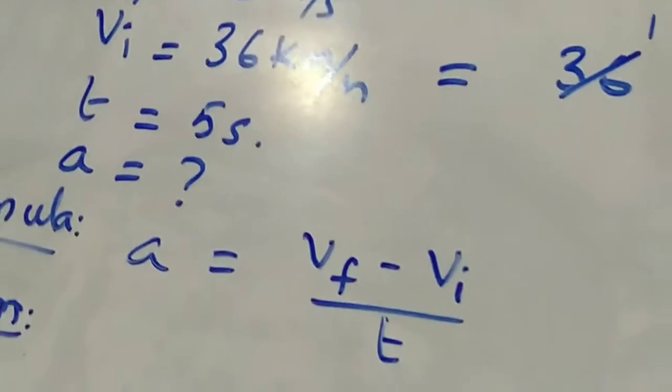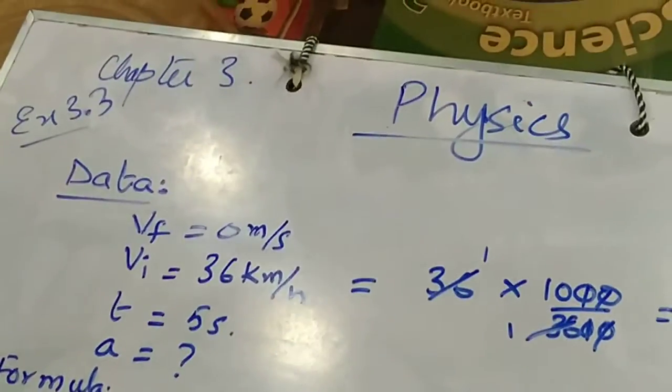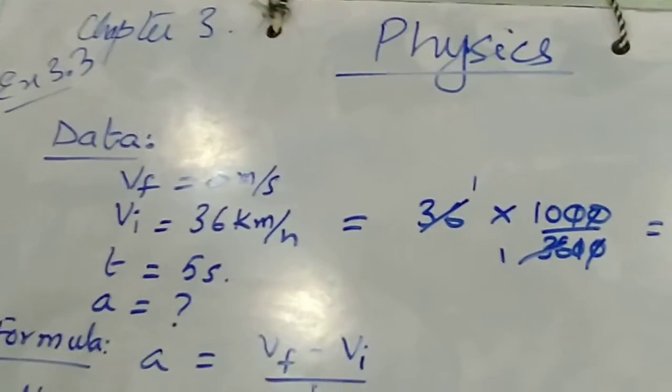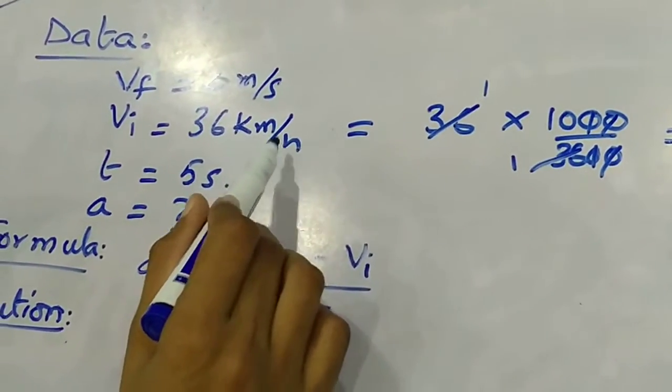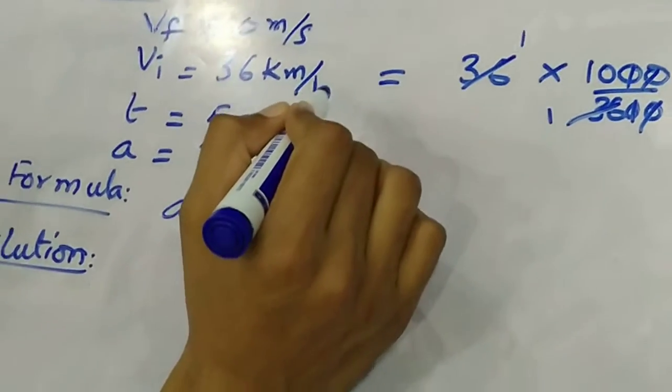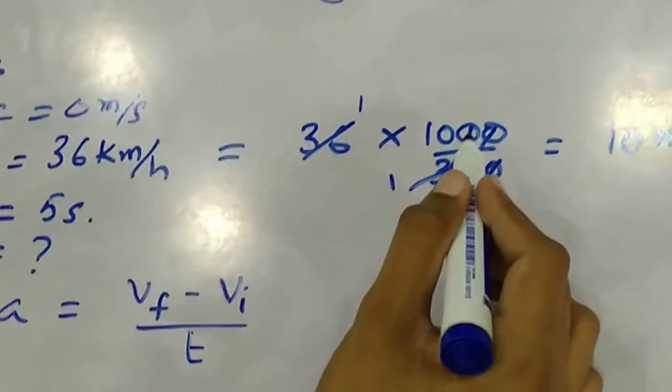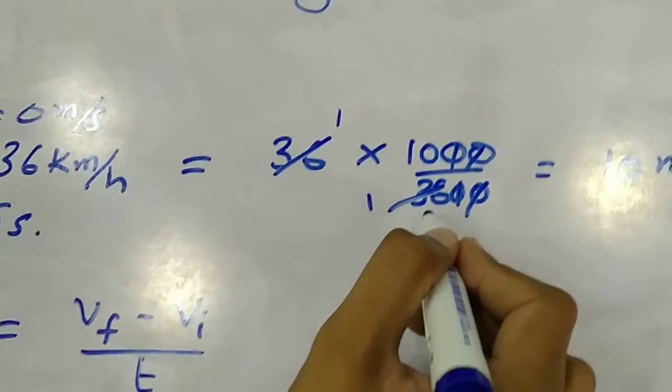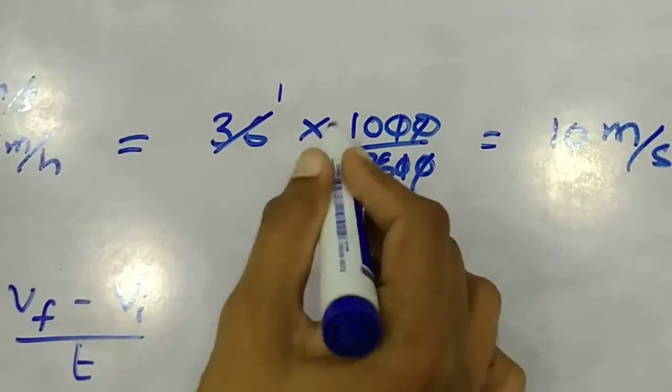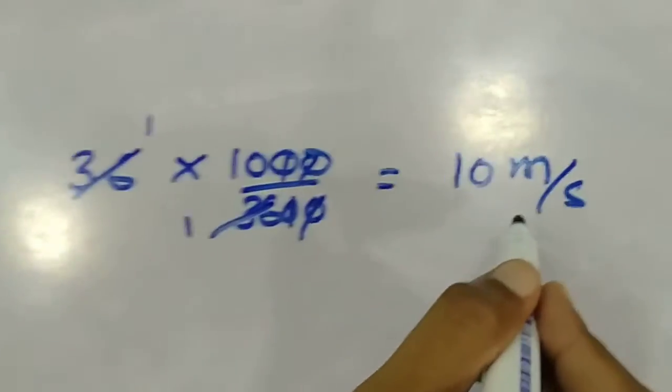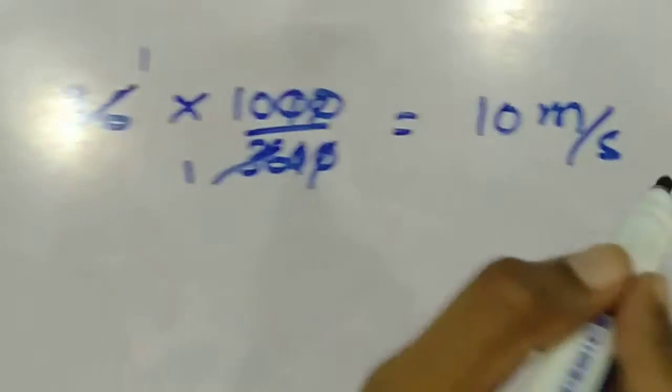Look, there are many things from the wording. The first thing is that they told you the initial velocity was 36 km an hour. Again, km an hour is not our standard unit. We have to convert it to meters per second. We multiply it by 1000 and divide it by 3600, because 1 hour is 3600 seconds. So when we have calculated it, we have 10 meters per second. So the initial velocity Vi we will take as 10 meters per second.